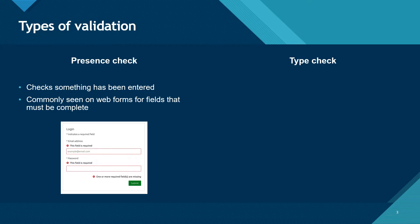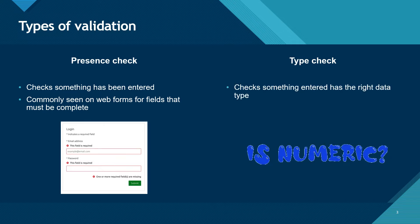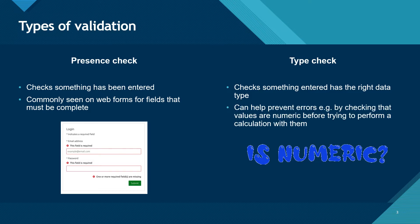A type check is when we check that the user has entered something with a valid data type. This can help to prevent errors by checking that a numeric value was entered before trying to perform a calculation with it.